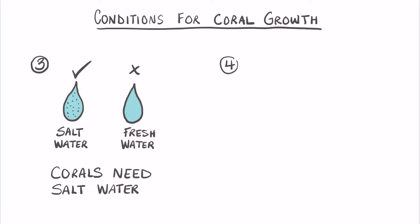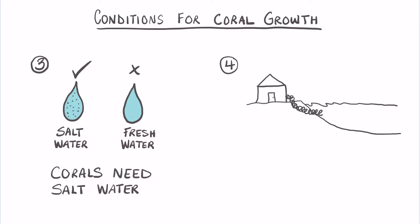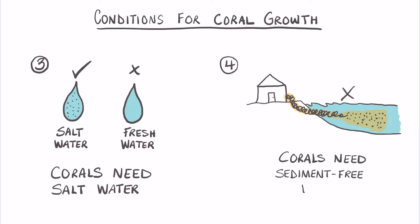Another condition needed for corals is clear water. There are many activities which take place on land that can affect coral reefs, such as farming, construction, dredging, and sewage treatment. Also, rainwater runoff can take particles from the land and deposit them into nearby water streams which can end up in the ocean. Too much of these particles, called sediments, can smother the tiny polyps and block out sunlight, so clear water is best for their survival.